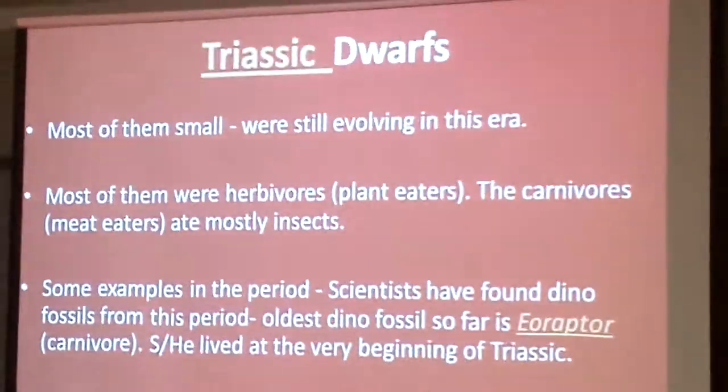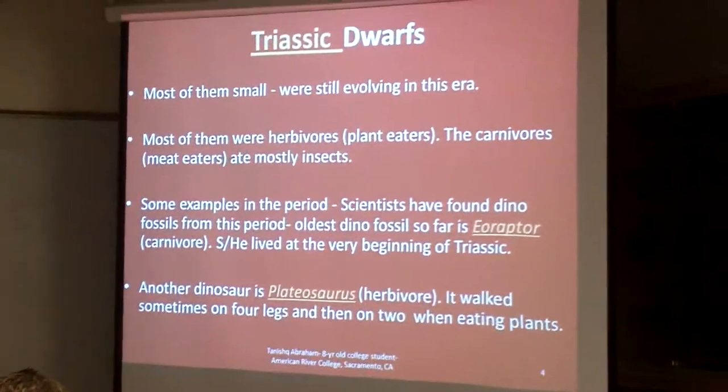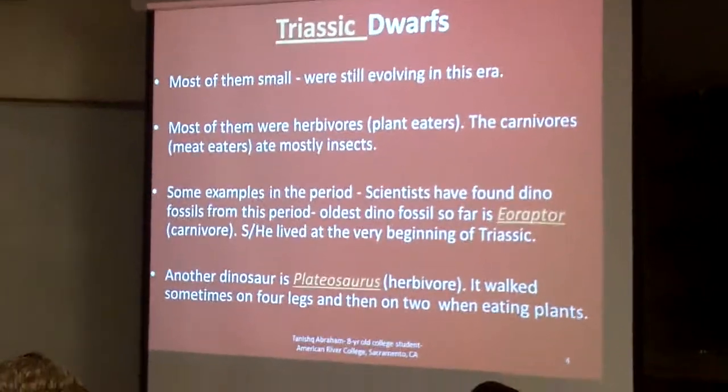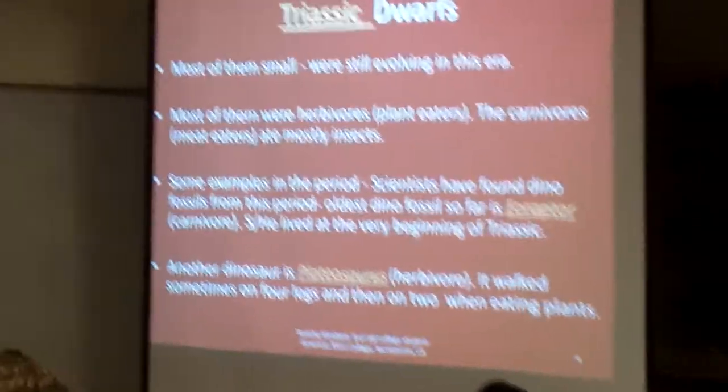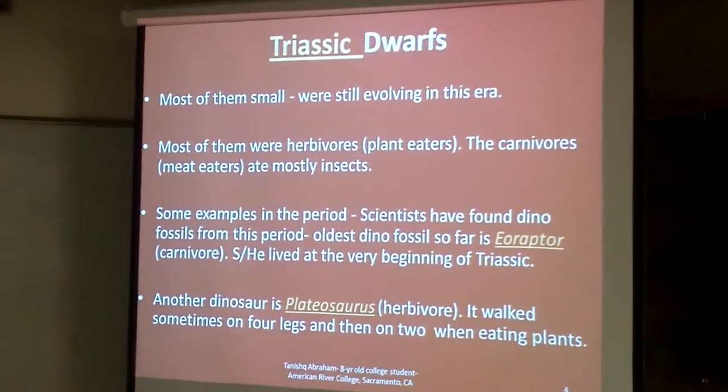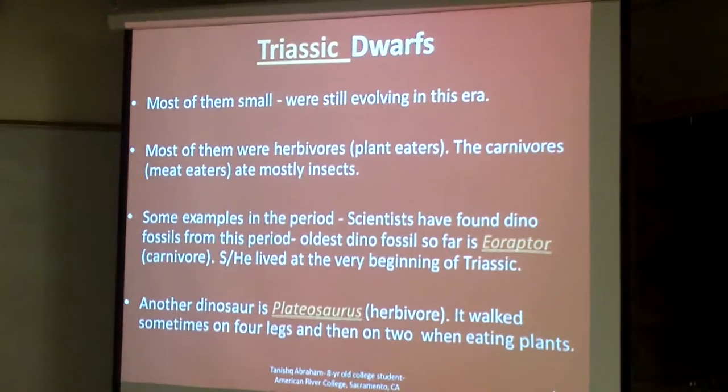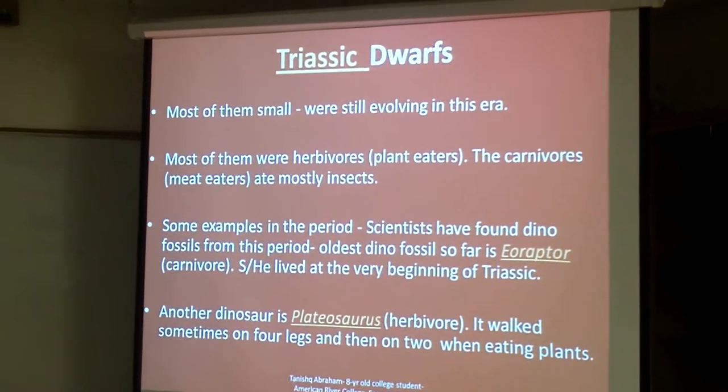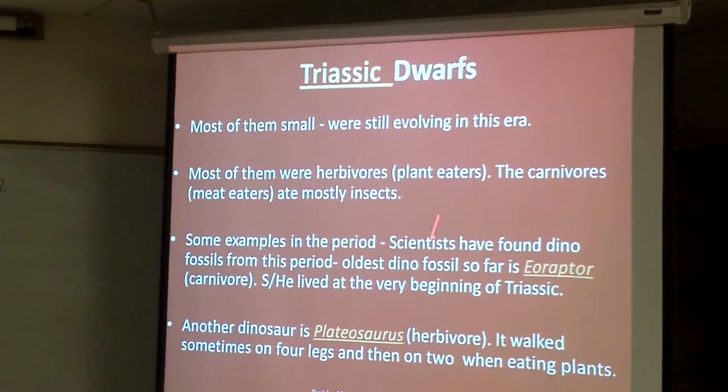So most of the Triassic dinosaurs were small, but the meat eaters actually ate things like insects and small birds. And some examples are Eoraptor.